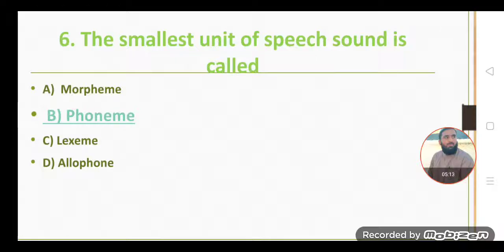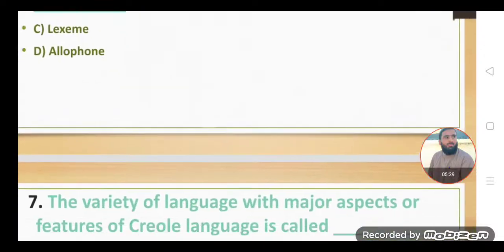And morpheme is related to grammatical function. So if it's asked that the smallest unit of meaningful sound is called phoneme, and the smallest unit of meaning or grammatical function is called morpheme, then morpheme is correct. Option B is the correct option.